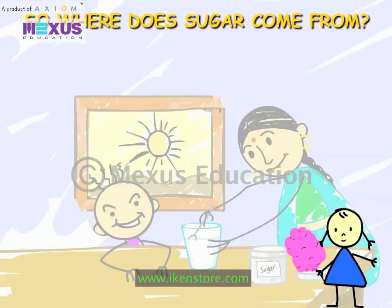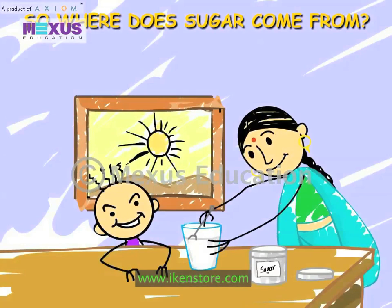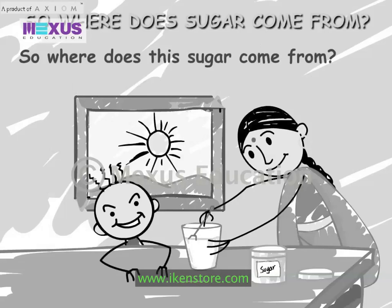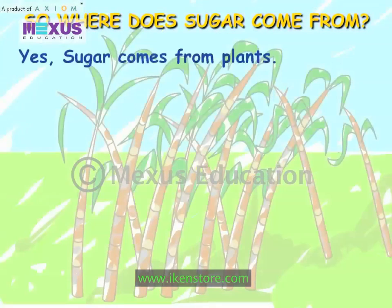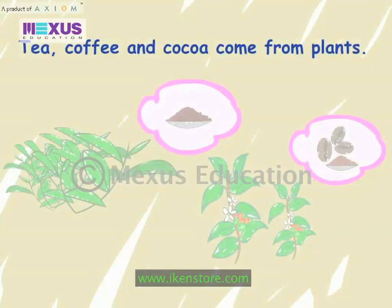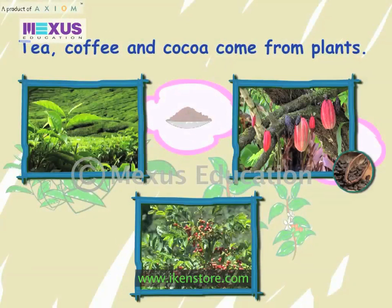So, where does sugar come from? Most of us have milk in the morning. Mama puts sugar in our glass of milk. So, where does this sugar come from? Yes, sugar comes from plants. Tea, coffee and cocoa also come from plants.